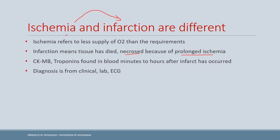Particularly in the case of the heart, when there is ischemia, in lab diagnostics we have enzymes called CK-MB and troponins that are found in the blood — usually after six to eight hours of infarction, but some enzymes may also be found after minutes or an hour. The diagnosis of myocardial infarction is usually clinical, with lab tests and ECG findings.